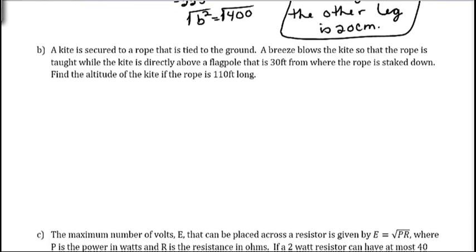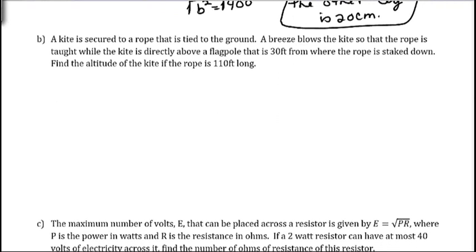Okay, our next one. A kite is secured to a rope that's tied to the ground. So, we have a kite that's tied to the ground here. A breeze is blowing so that the kite string is at an angle like this. And the rope is tight. So, again, anytime you have some kind of a situation you could draw a picture of, you should.